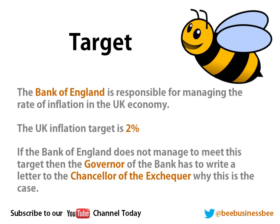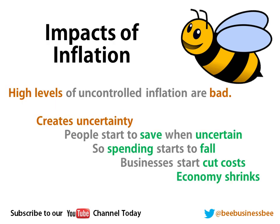The Bank of England has got a few tools it can use to try and control inflation. High levels of uncontrolled inflation are bad, mainly because they create uncertainty. When people feel uncertain, they start to save, and when they are saving they are not spending money, so their spending power falls. As a result, businesses start to cut costs and reduce prices, typically laying off staff. The economy starts to shrink — and when people feel they are going to lose their job they save even more, spend even less, and prices fall further. This process is called deflation, and deflation is bad for an economy because it shows things are getting smaller and your economy is getting weaker.